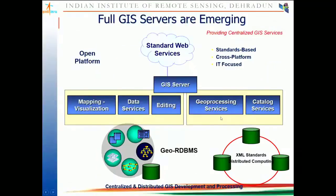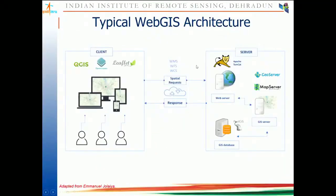Tools available include transparency, enable swipe, remove layer, zoom to layer extent, and overlay maps. You can add layers: selecting which thematic layer you want displays it on the portal. You can also add your own images. This is a typical example of a Web GIS application. For how to develop a Web GIS: at the client end, technologies like QGIS, Leaflet, and OpenLayers are used. Spatial requests are made in the form of WMS, WFS, or WCS. At the server end, Apache Tomcat is the web server, GeoServer or MapServer are the GIS servers, and PostGIS is the GIS database.